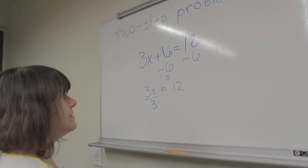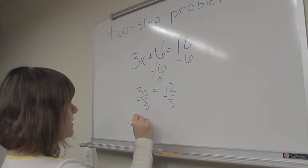Again, what you do to one side, you have to do to the other. So you have to divide 12 by 3 as well. And x is equal to 4.